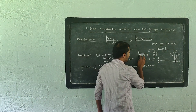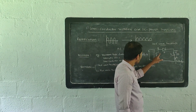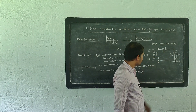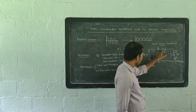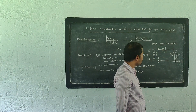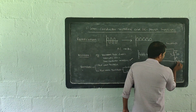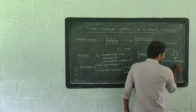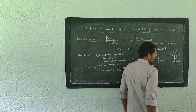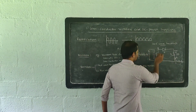When the negative half cycle is introduced to the circuit, terminal A becomes negative whereas terminal B becomes positive. The diode D becomes reverse biased — it will not conduct. Therefore, across the load resistor we will get a vacancy as the corresponding output. We don't have the negative half cycle.